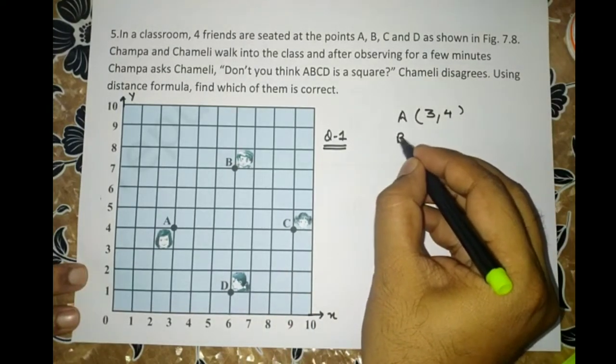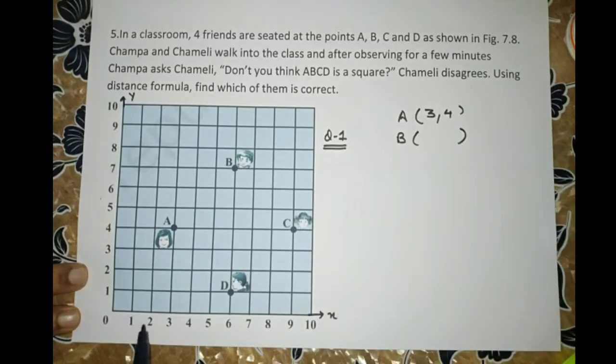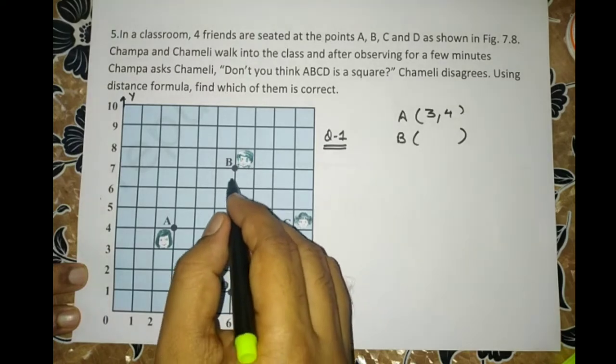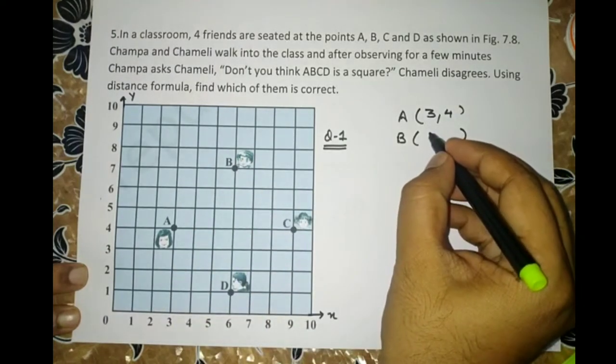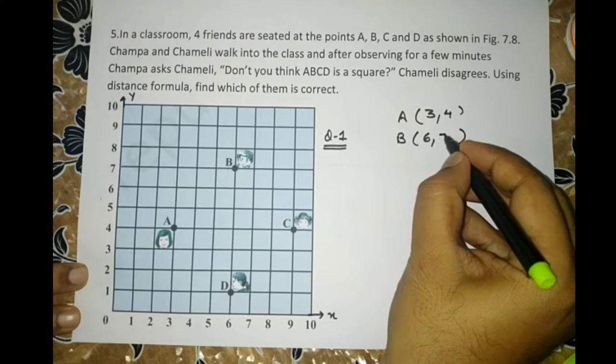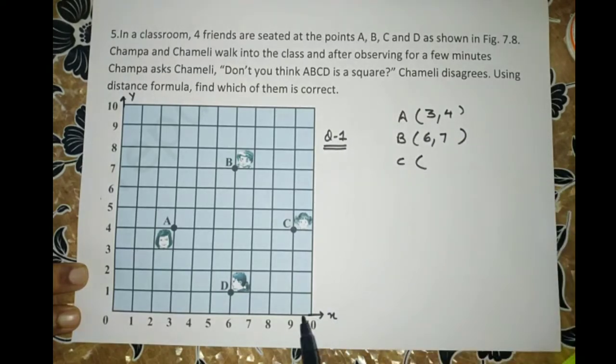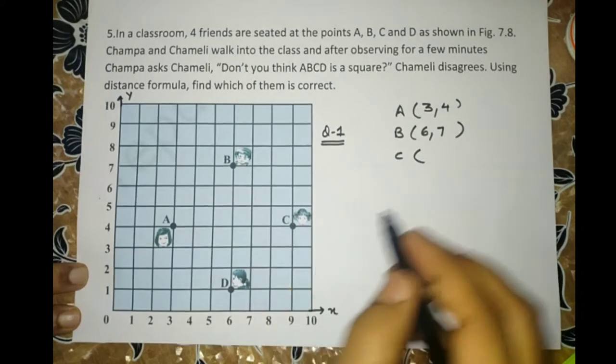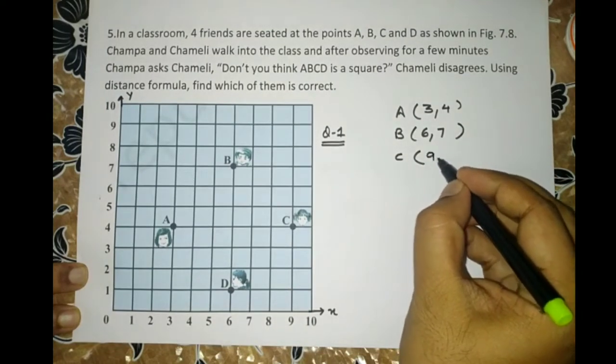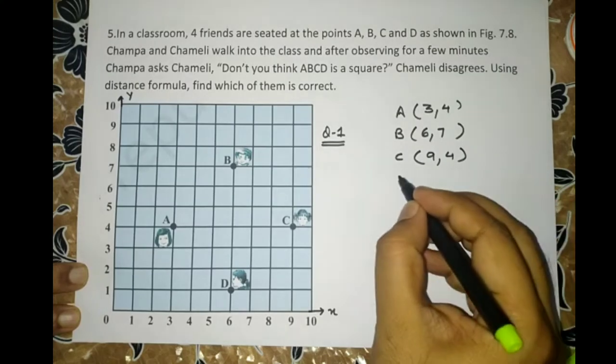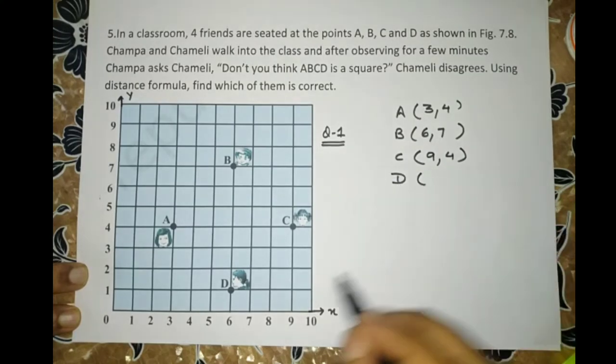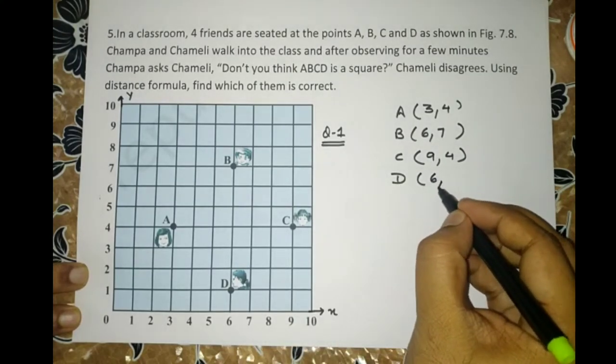Similarly, the coordinates of B will be 6, 7. Similarly, C will be 9, 4, and the D point will be 6, 1.